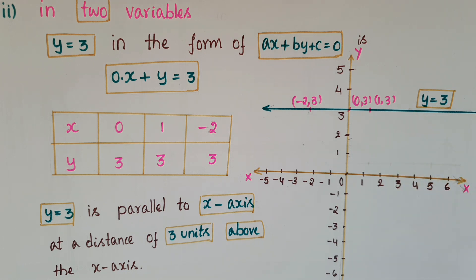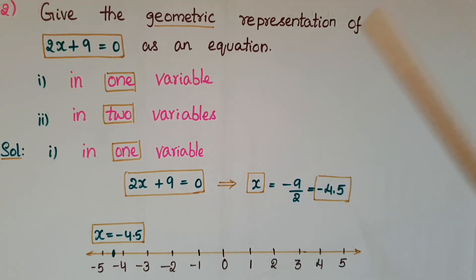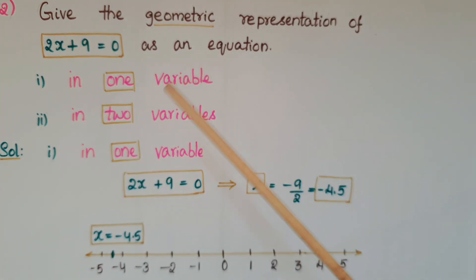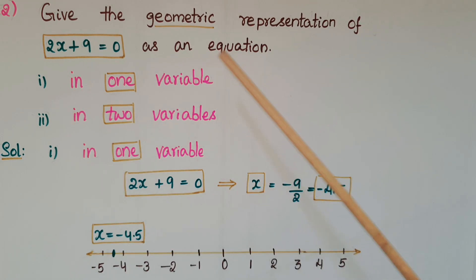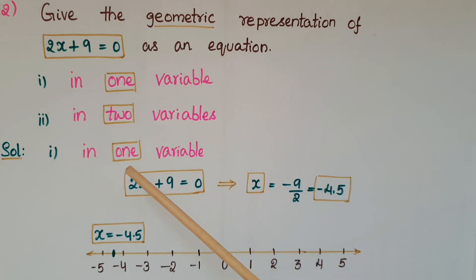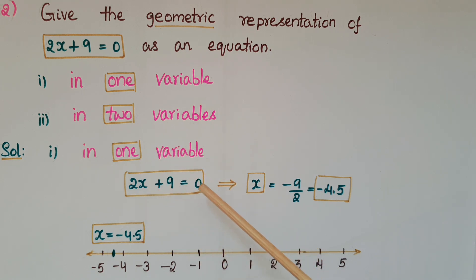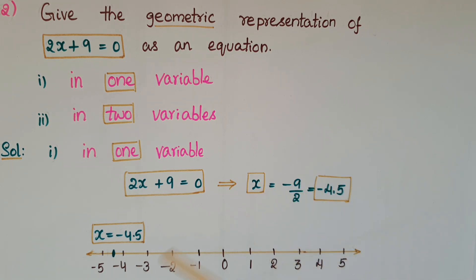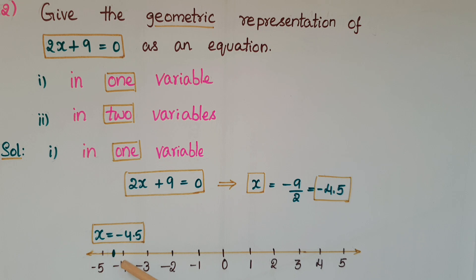The next question is: give the geometric representation of 2x plus 9 equals 0 as an equation in one variable and in two variables. In one variable, we represent it on a number line. Solving 2x plus 9 equals 0 gives x equals minus 9 by 2, that is minus 4.5. Draw the number line and mark this point between minus 4 and minus 5 at the center — this is x equals minus 4.5.